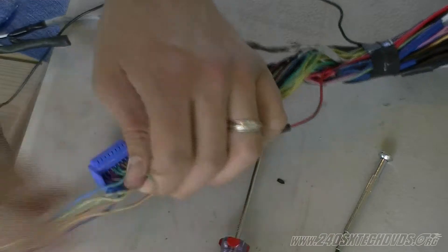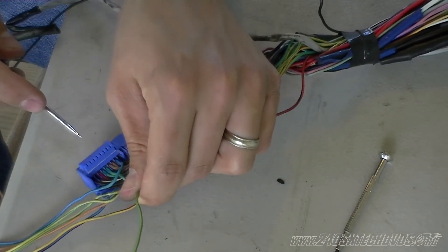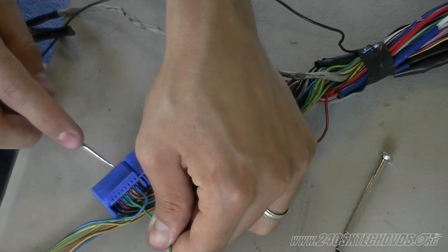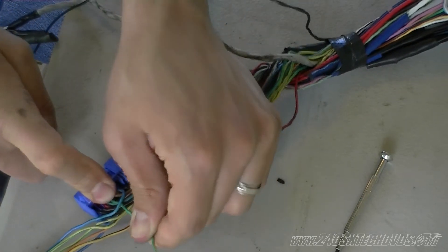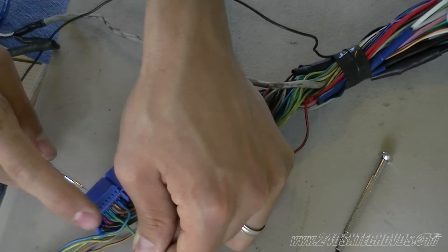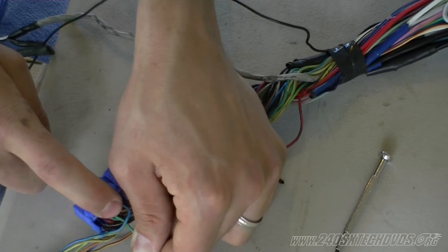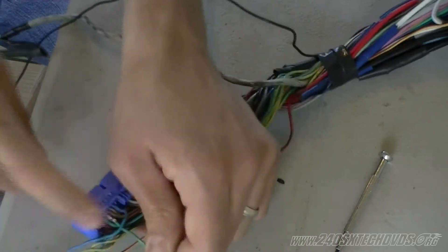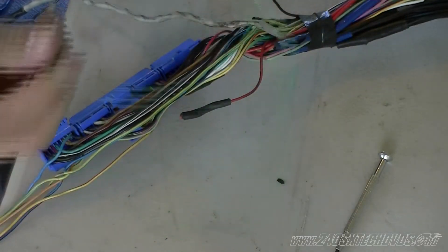We'll take the green with the yellow stripe wire out. And the green with the yellow stripe wire is out.